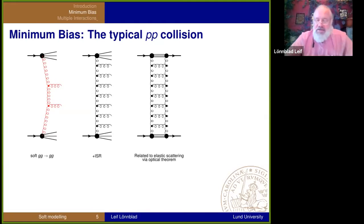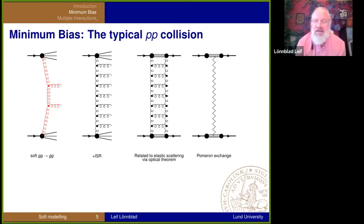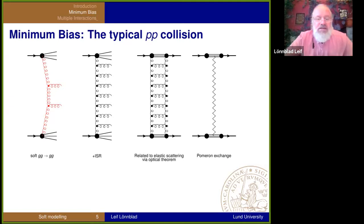In the 1960s, we didn't know about partons. Instead, there was a theory called Regge theory, where you described elastic scattering of hadrons in terms of the exchange of a particle — that could either be a meson, or to explain the actual rise of the cross-section, you needed a hypothetical particle called a pomeron. And that turns out to be a fairly useful concept.